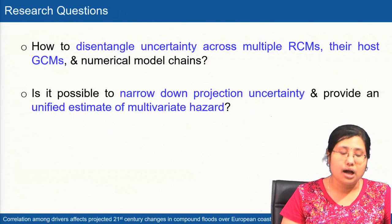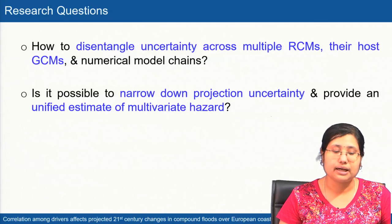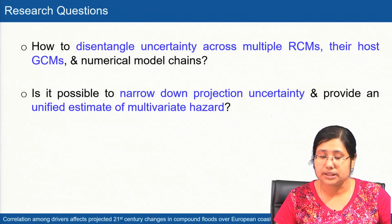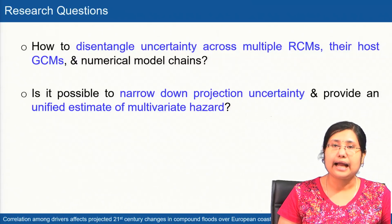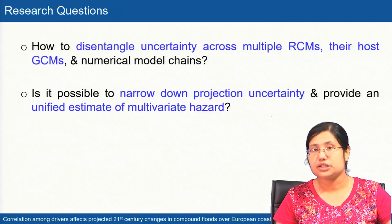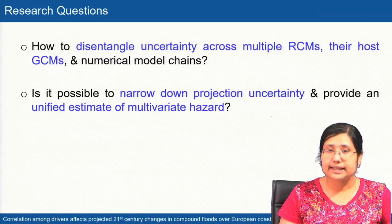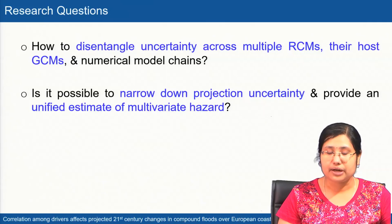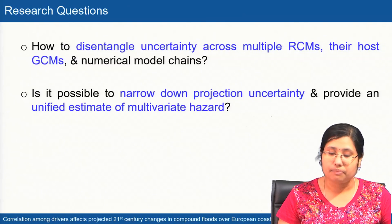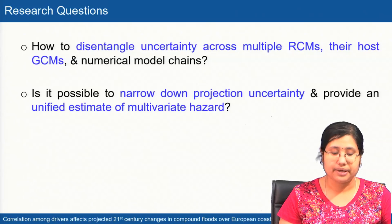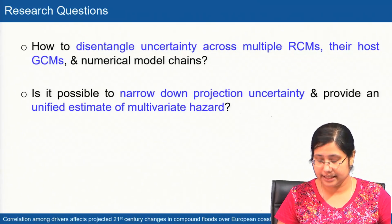The research questions are: how to disentangle or separate the uncertainty across multiple regional climate models and their host GCMs, and how uncertainty is propagated through the numerical model chain. Second, is it possible to narrow down the projection uncertainty and provide a unified estimate of the multivariate hazard?